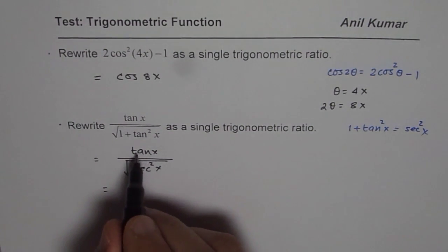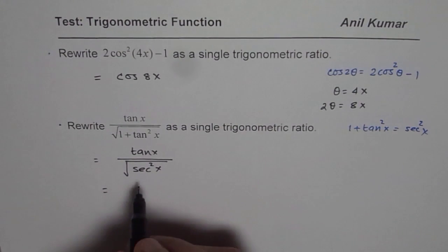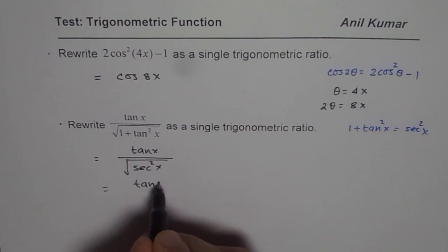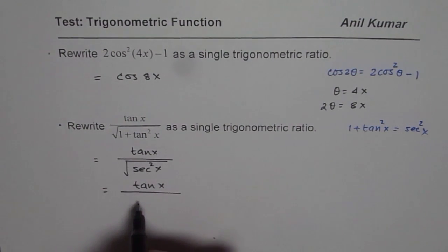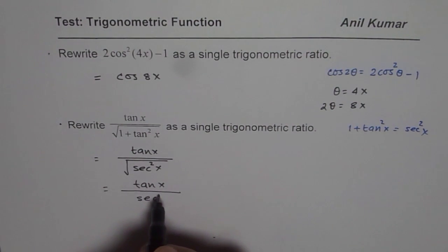Now, that gives us tan x could be written as sin x over cos x. Let me do it in the next step. Let me first write this as tan x over sec²x. Square root will be sec x, correct?